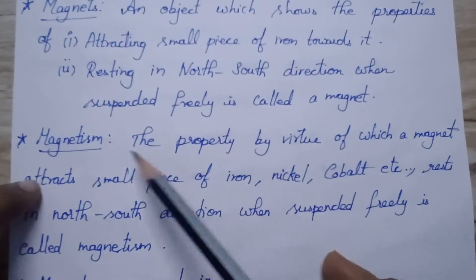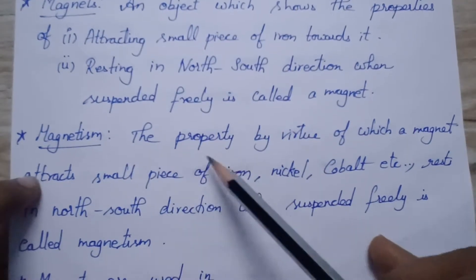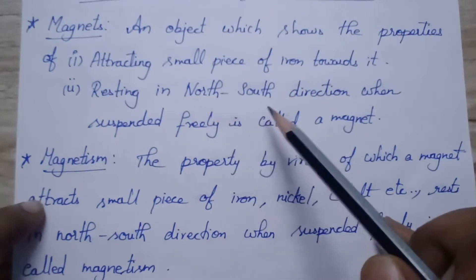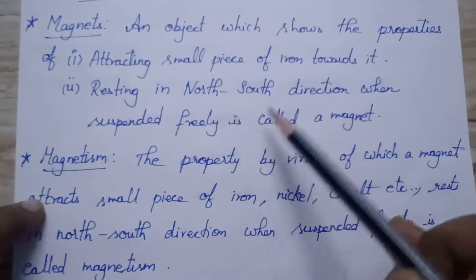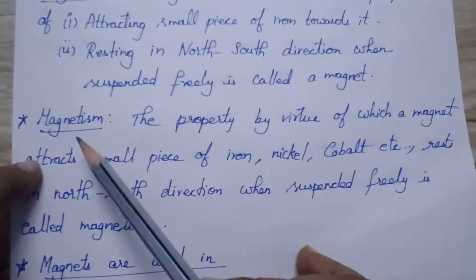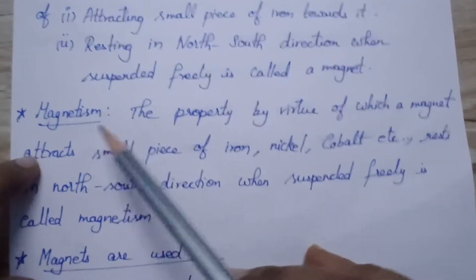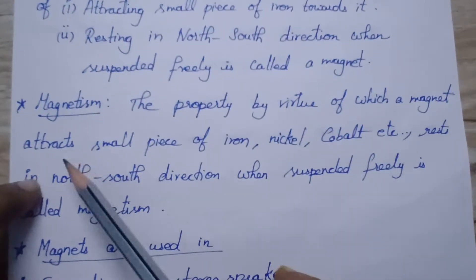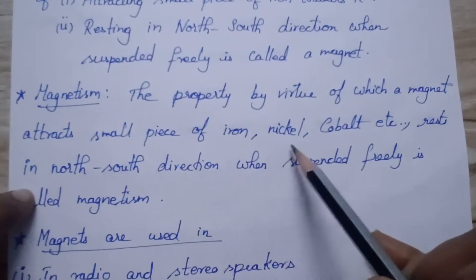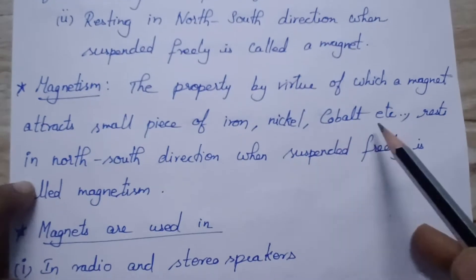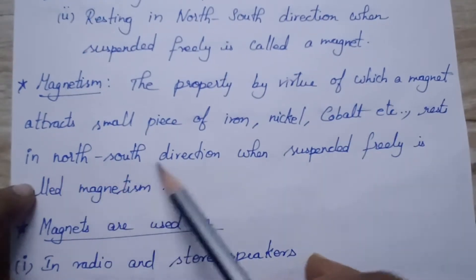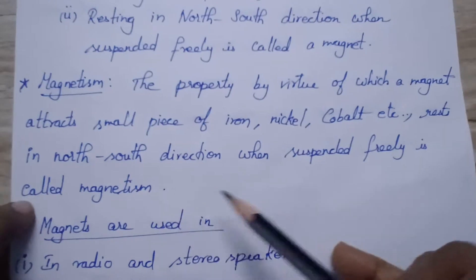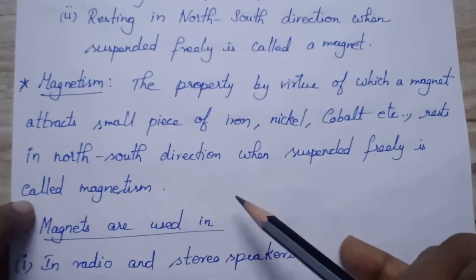What is meant by magnetism? The property by virtue of which a magnet attracts small pieces of iron, nickel, cobalt, etc., and rests in the north-south direction when suspended freely, is called magnetism.